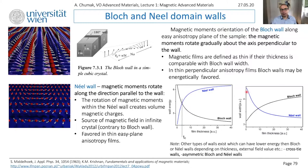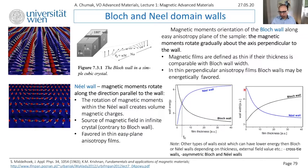Regarding wall widths, the Néel wall wants to have small energy, meaning it wants to have wide domain walls. This means the angle between two neighboring spins is practically zero — they are practically parallel — and only on a longer scale does the angle change. In this case, you minimize exchange energy, which simply wants spins to be parallel and increases as soon as there is an angle. It is clear that the width of the domain wall should be as large as possible. The same conclusion applies to the Bloch wall for thick samples: the wall wants to be as wide as possible, again to minimize exchange energy.